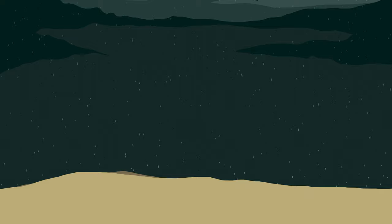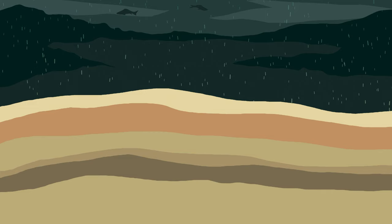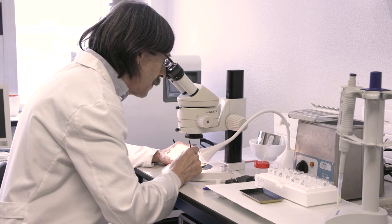Marine sediments deposit layer after layer, and each of these layers contains millions of particles and compounds that encapsulate climate information. In some settings, like continental margins, sedimentation rates are so high that we can reconstruct shorter climates in high resolution.